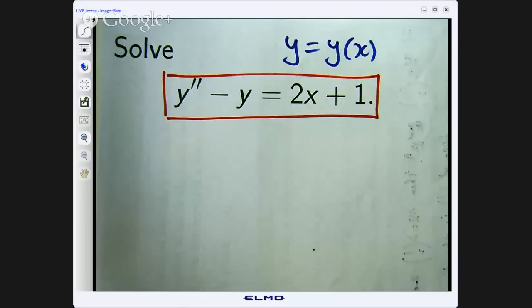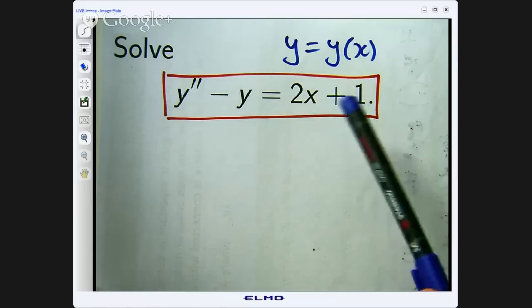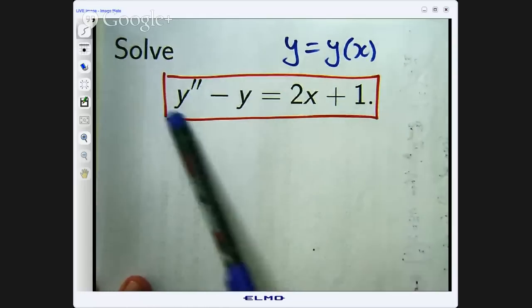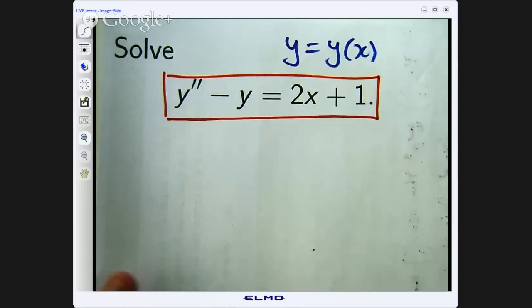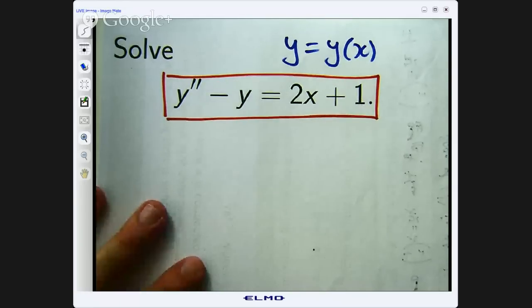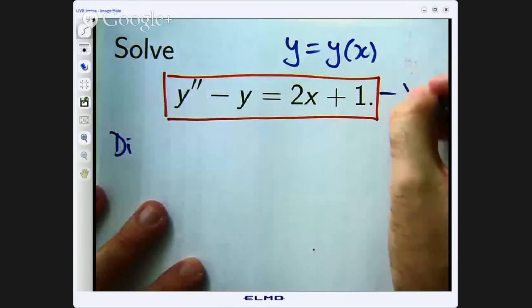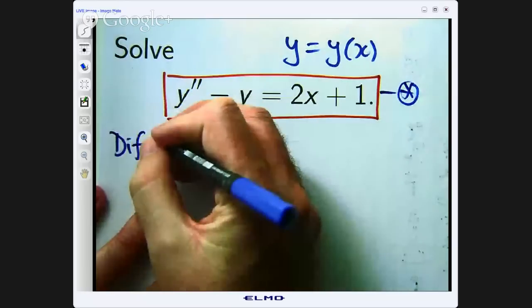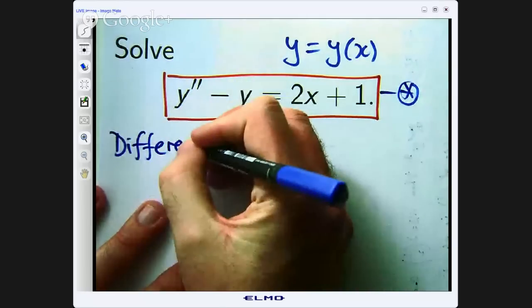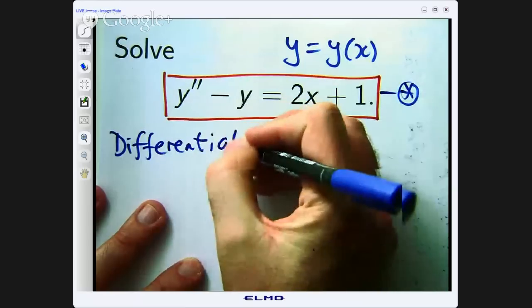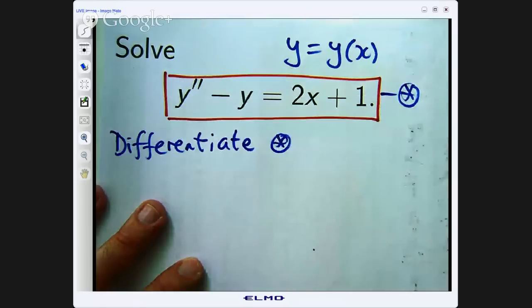What do you do? You form a related polynomial equation and you look at the roots. So it is going to be similar with this. We are going to use the homogeneous problem to solve this problem just by getting the right hand side down to 0.